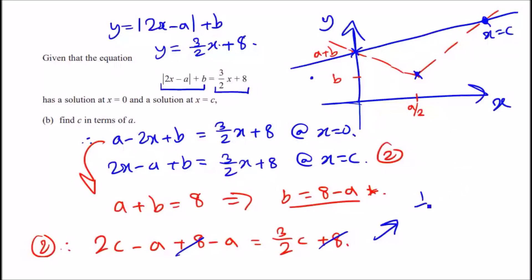So we're going to have 2c minus 3 over 2c, which is half c, and minus 2a. We're going to have half c equals 2a, and finally solving this you get c equals 4a.